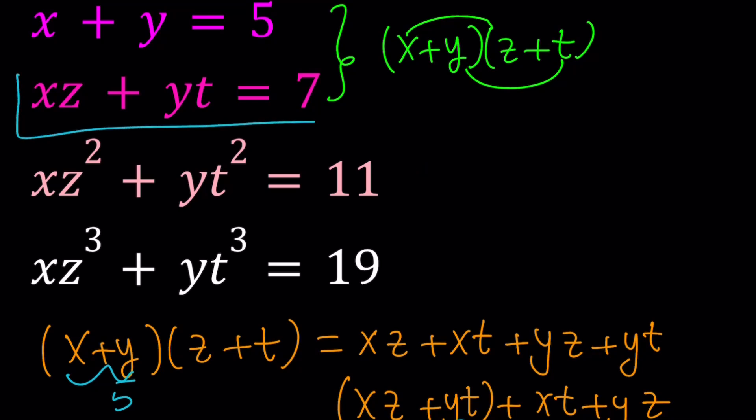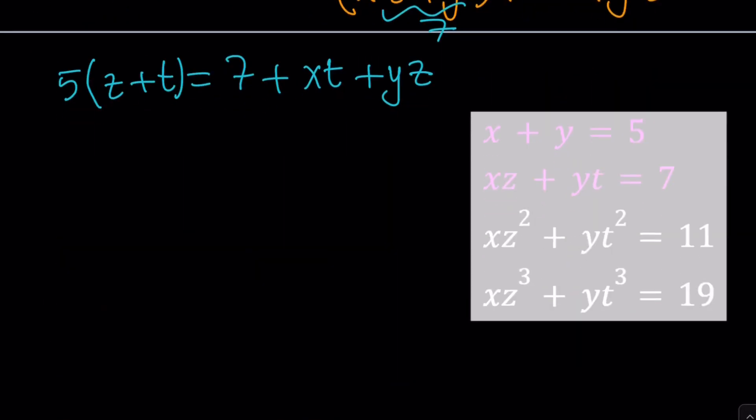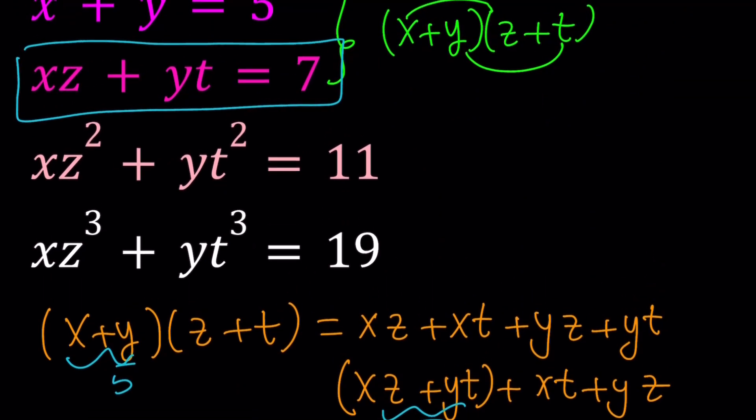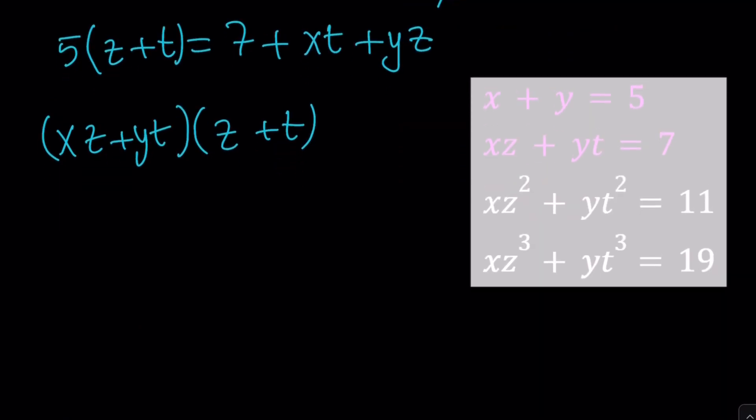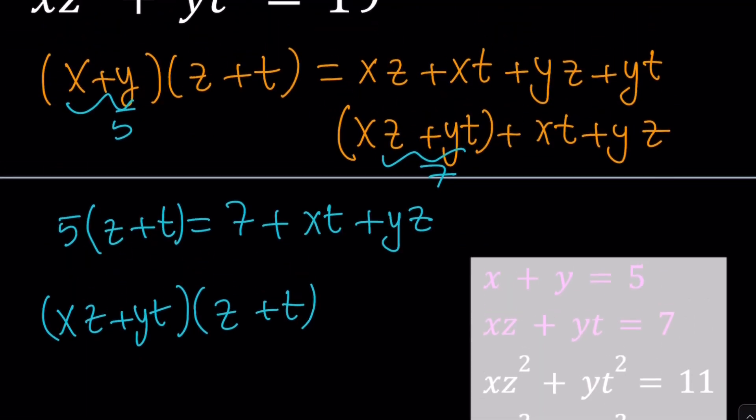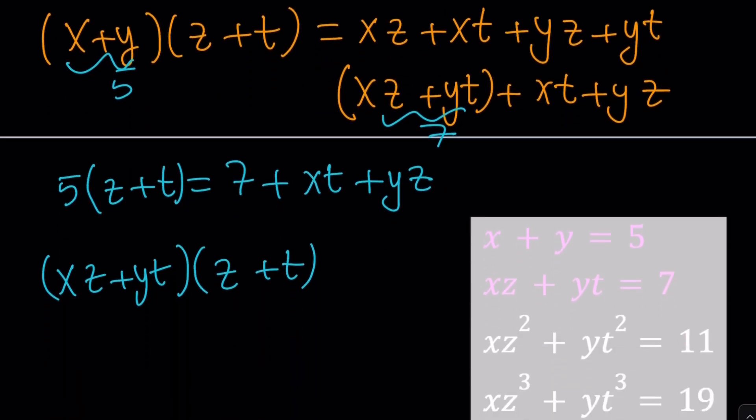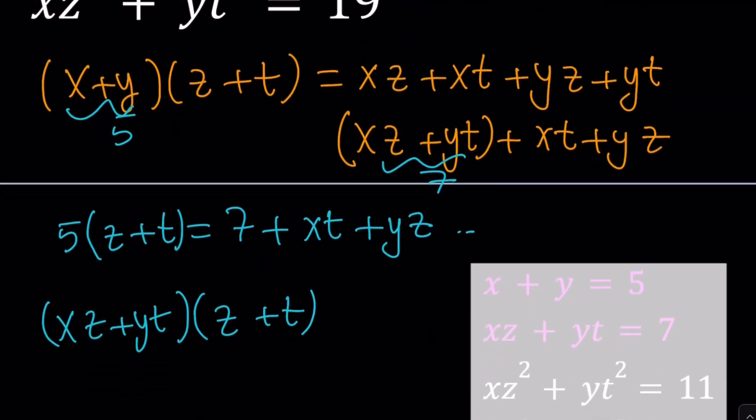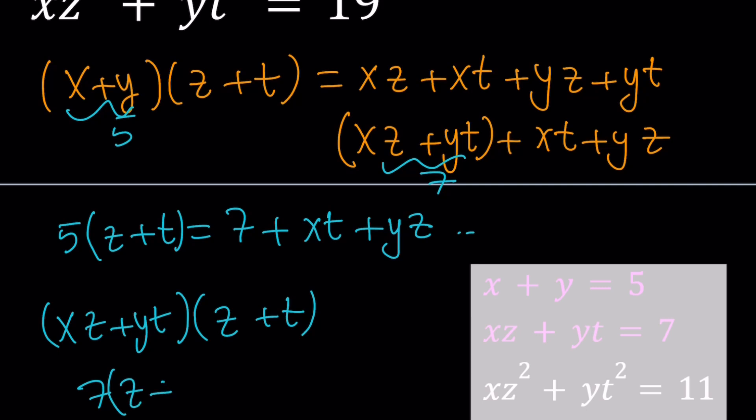Well, I can take this and multiply by z plus t again. xz plus yt multiply by z plus t. And that's definitely going to give you xz squared plus yt squared with other terms. And of course, you still have to take care of them. So we're going to end up with lots of equations here. But when you multiply those two things, do you know what z plus t is? Not yet. But we do have it in the first equation. Anyways, xz plus yt is equal to seven. So this is seven times z plus t.